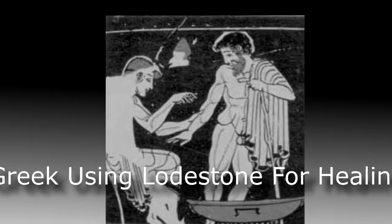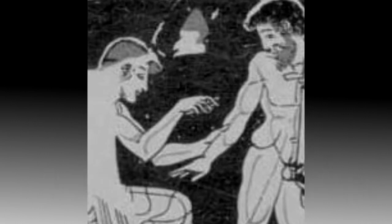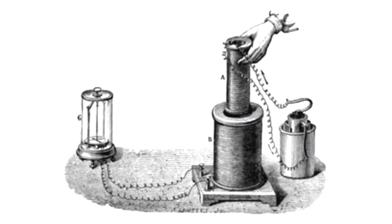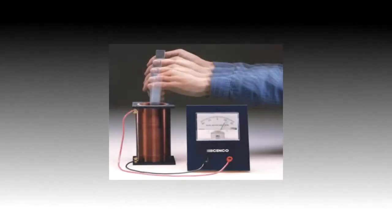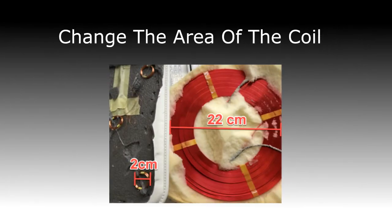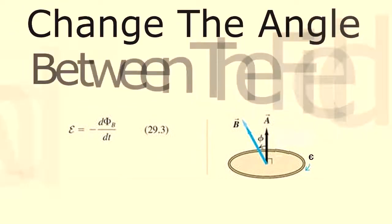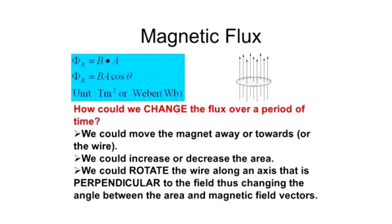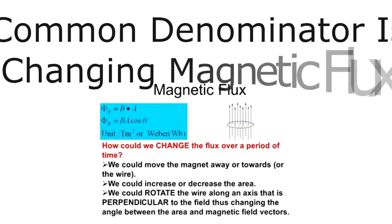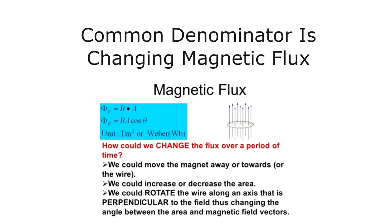I've heard that the ancient Greeks even knew this. When they took lodestones for healing, they would make sure to move them really fast to create more of a dynamic healing effect. There are three ways that you can induce EMF in a loop of wire. The first is by changing the strength of the magnetic field. Another way is by changing the area of the loop or coil. And another way is by changing the angle between the magnetic field and the face of the loop. In all three scenarios, what is actually changing is the magnetic flux — that is the common denominator.